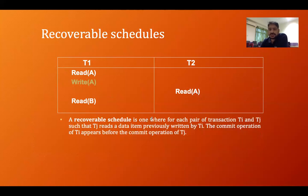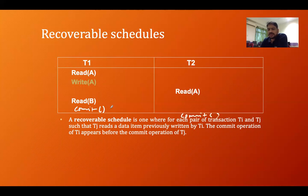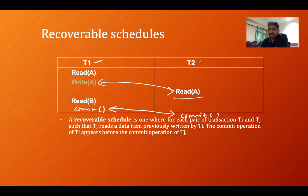This is called a non-recoverable schedule. A recoverable schedule is one where, for each pair of transactions Ti and Tj such that Tj reads a data item previously written by Ti, the commit operation of Ti appears before the commit operation of Tj. It means the commit of T1 will occur first, then the commit of T2 will occur. If T2 has read the value from T1, T1's commit operation is done first, then T2's commit operation takes place.